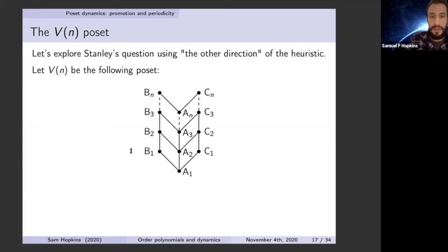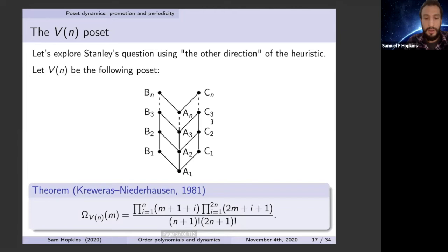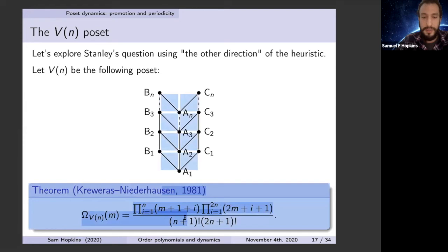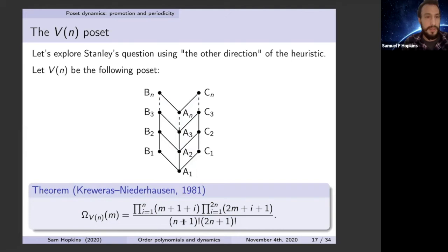Let V_N be the following poset, which I call V_N because it looks like a bunch of Vs stacked on top of each other. It's not a Young diagram shape or shifted shape, so I draw its Hasse diagram. Kreveras and Niederhausen in 1981 proved that this poset has a product formula for its order polynomial. I learned of this from Ira Gessel, who has very exhaustive knowledge of obscure combinatorics papers — I asked on MathOverflow for examples of posets with order polynomial product formulas, and he responded with this result.